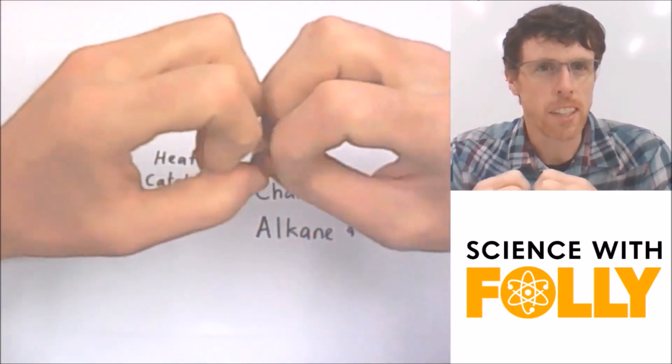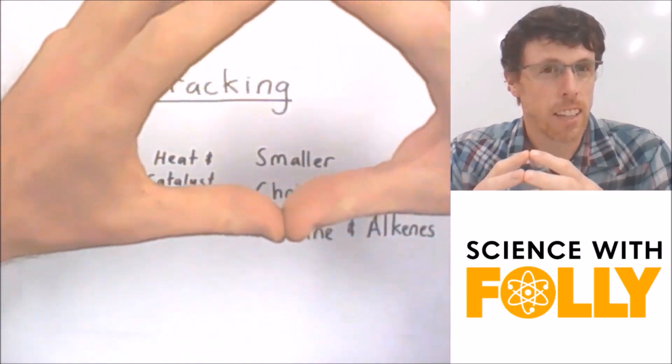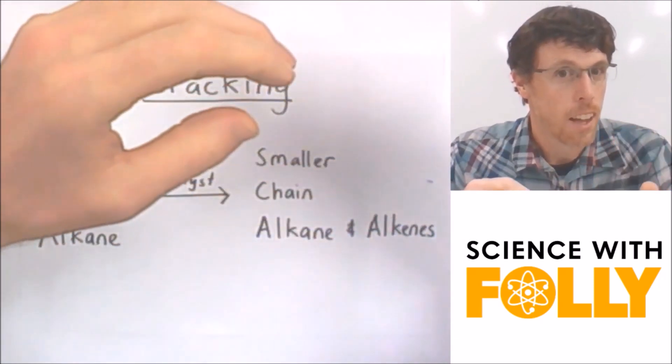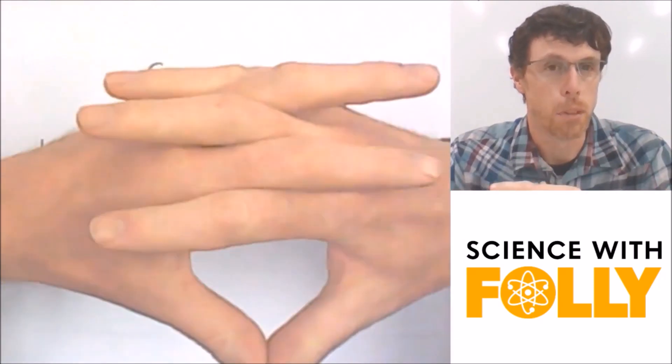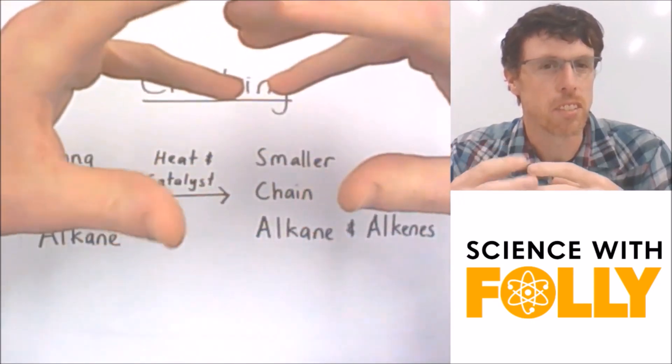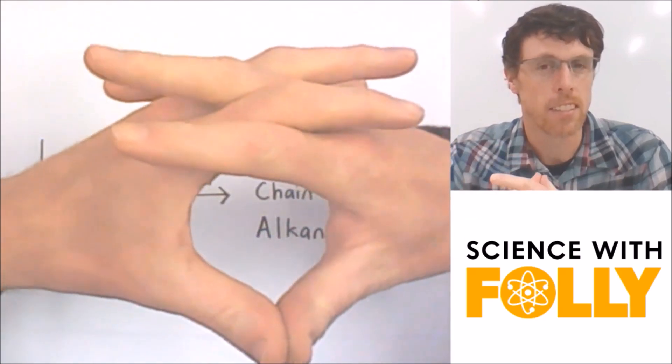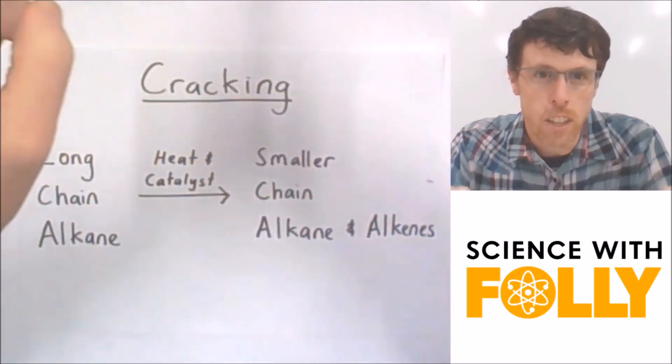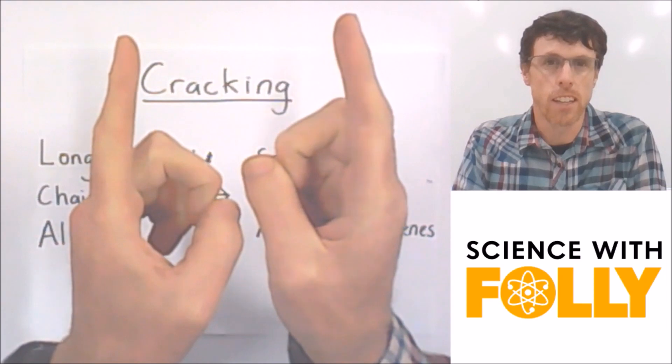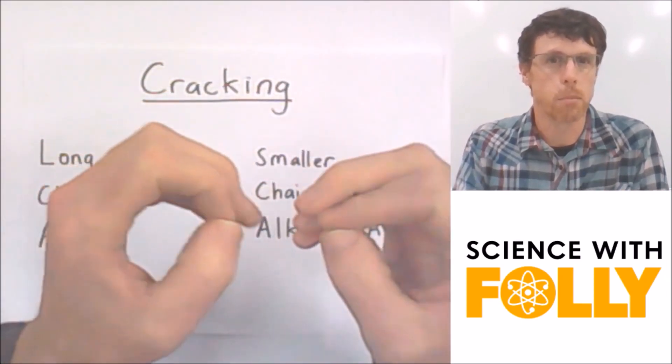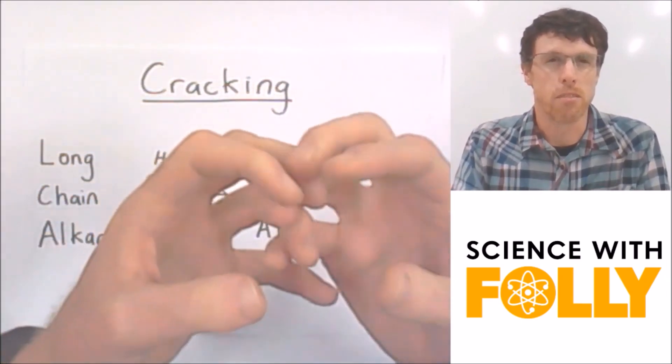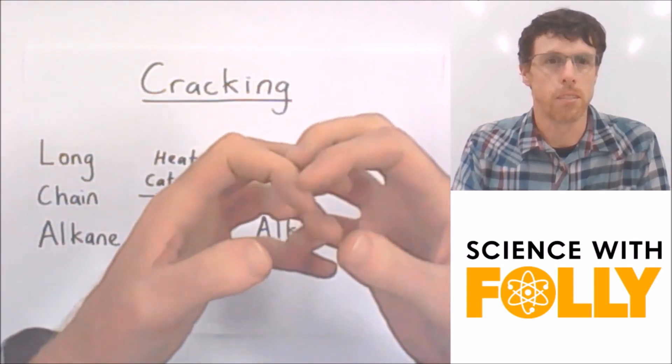So by cracking those long chain alkanes which have got a high boiling point and a high melting point because they're really viscous, we turn it into shorter smaller chain alkanes and alkenes. And as you know, the shorter the chain, the lower the melting point and therefore the less viscous, the more fluid it is.